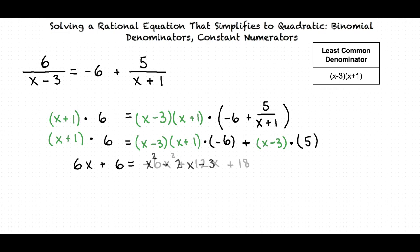The result is negative 6x squared plus 12x plus 18. And finally, 5 times x minus 3 equals 5x minus 15.